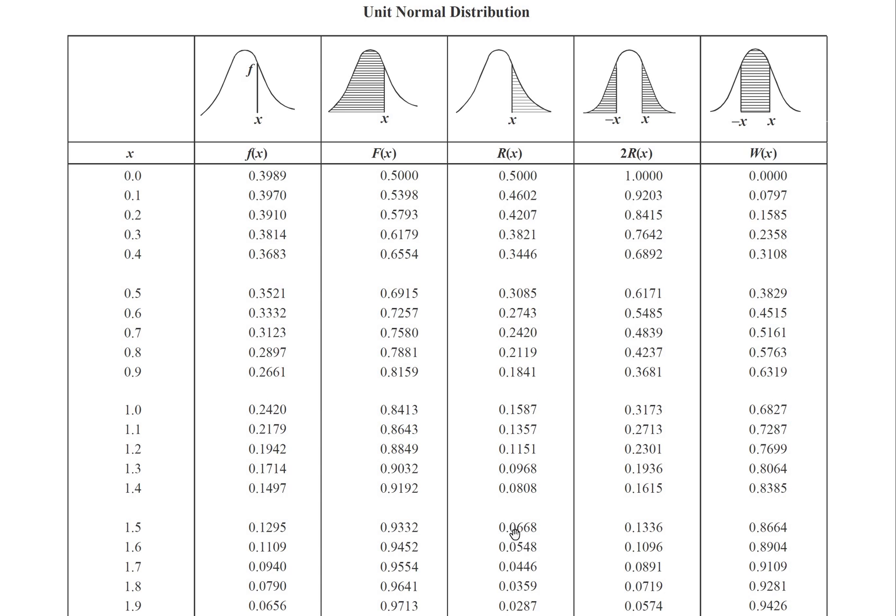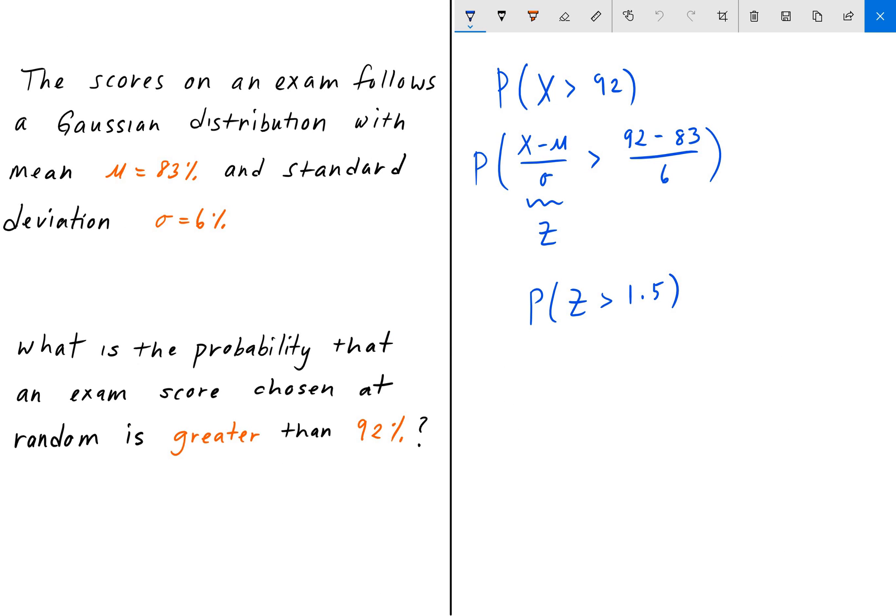So we'll just call it 0.067. So this probability is 0.067, and that is our answer. So it's going to be roughly seven percent.